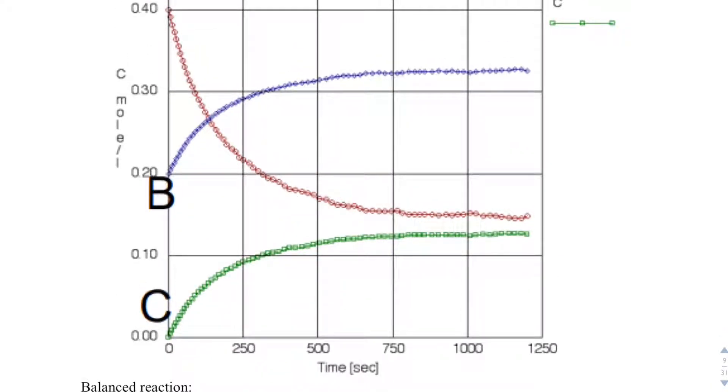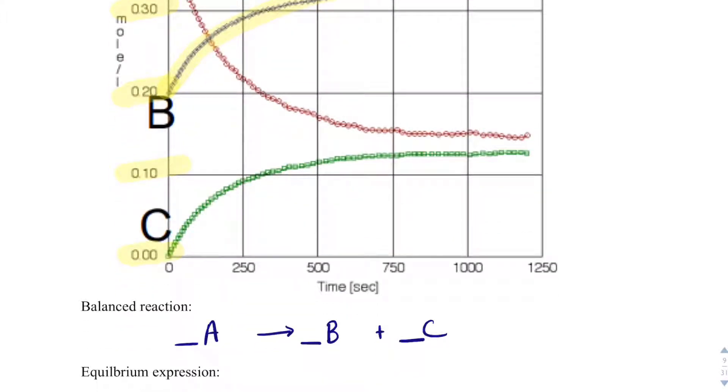is that B increases a certain amount, maybe from about 0.2 to 0.33, so it increases by 0.13. And then C also increases by that same amount, about 0.13. So we could say that their coefficients are the same, and let's just make it 1.